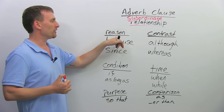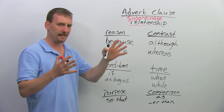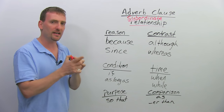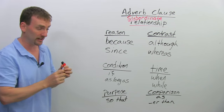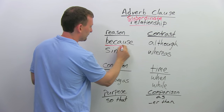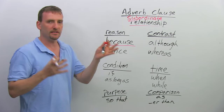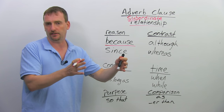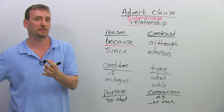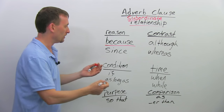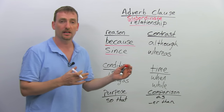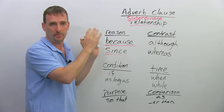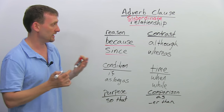For example, when we're looking at reason, I'm going to talk about the conjunctions first. These are called the subordinate conjunctions — they clearly show the relationship between the clauses. So: "because." Because means reason. I did something because I had to do it — that's the relationship between the two. "Since" can also mean because. Of course, since can also mean since the beginning of something, since a time, but it can also mean because when used as an adverb clause conjunction.